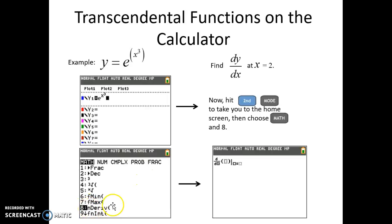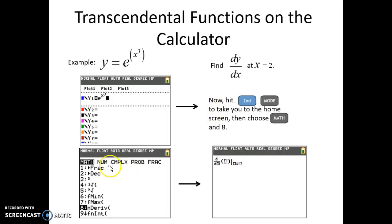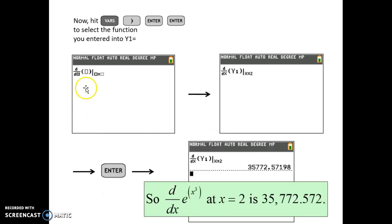Choosing number 8 means we want to take the derivative of whatever function we entered, and this will show up in the home screen. Before you do this, you need to come out of the Y equals screen — if you stay in the Y equals screen, it will show up there. Go back to the home screen, then hit Math and choose number 8, just like before when we did derivatives at a point. Now you've got to fill in all that information — remember, we're finding the derivative with respect to x.